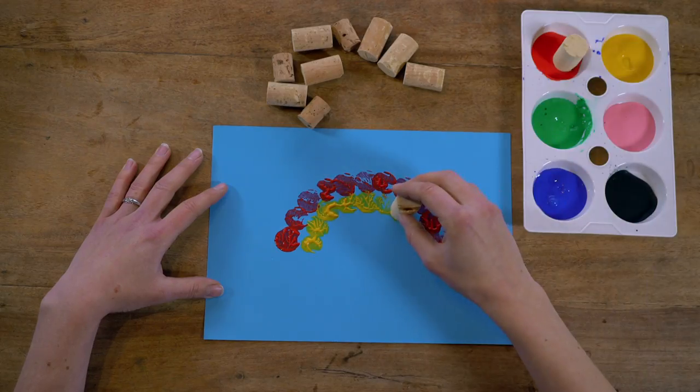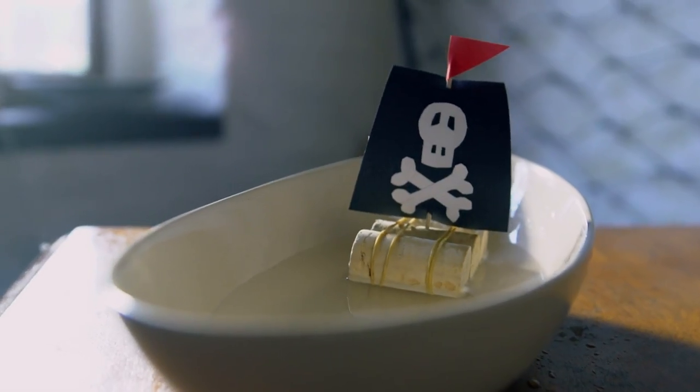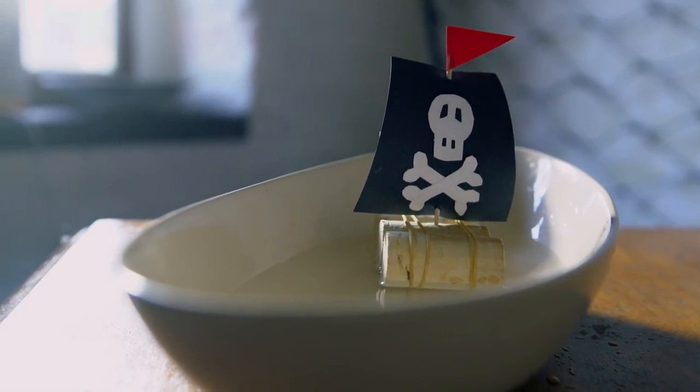Have fun turning old corks into paint stampers or these animal counters, but first let's make this fearsome pirate boat that floats.